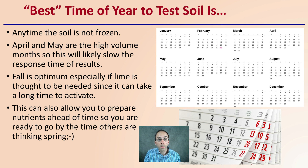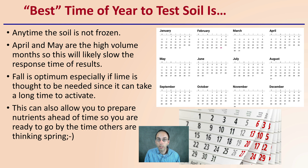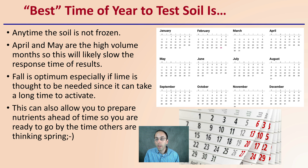Growers often wonder what's the best time of year to take their soil sample. Really, any time the soil is not frozen is a good time. April and May have the highest volume months, so this will likely slow the response time of your results and is typically not advised. Fall is optimum, especially if lime is thought to be needed, since it can take a long time for lime to activate. Fall sampling also allows you to prepare nutrients ahead of time, so you're ready to go by the time spring arrives and things get very busy. So fall sampling is advised, but really there's no single best time — any time the soil is not frozen works.